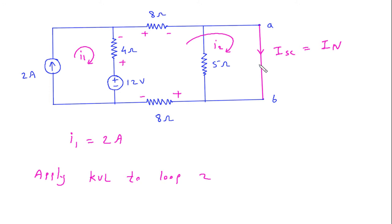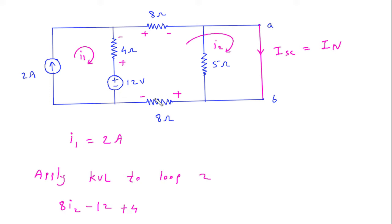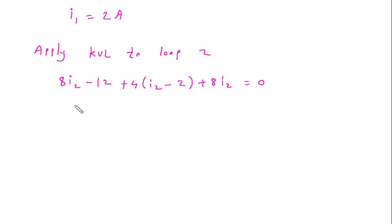We will ignore this 5 Ohm because it is short circuited. Starting from here, this will be plus 8 into I2, then minus 12, then plus 4 times (I2 minus I1) — so I2 minus I1 is 2 Ampere — then plus 8 I2 is equal to 0. So this will be 8 I2 minus 12 plus 4 I2 minus 8 plus 8 I2 is equal to 0.